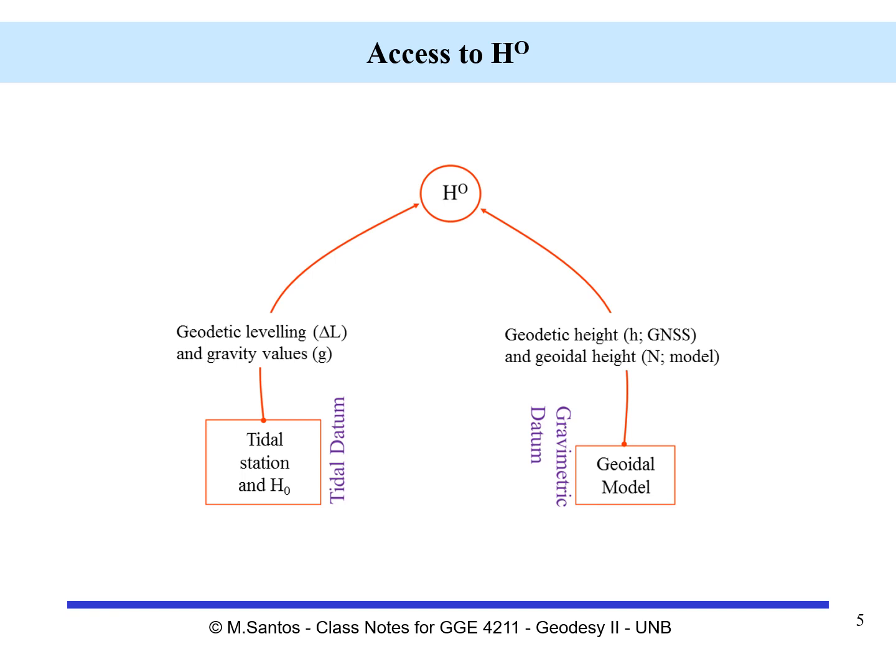This diagram shows schematically the whole idea. Our ultimate goal is to obtain orthometric heights. We can follow two different paths. The first one is the tidal datum — it starts from a tidal station and the determination of the orthometric height of a benchmark nearby, and then the rest of orthometric heights will be determined by means of geodetic leveling and gravity values.